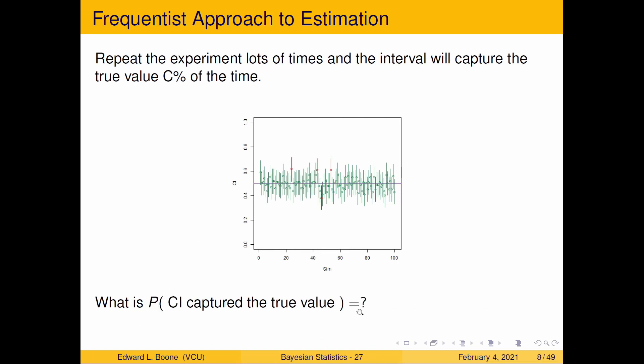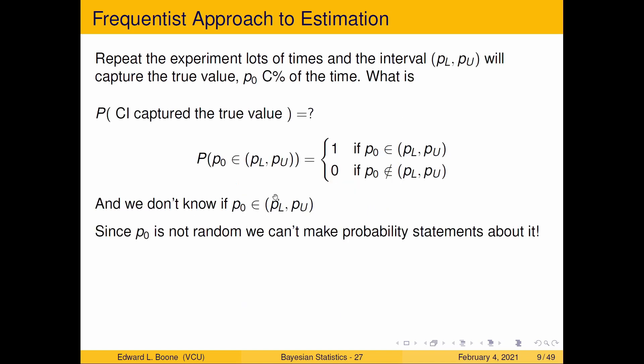What is the probability that our confidence interval captured the true value? So I give you two numbers and I say did this work or not and the answer is it's either one if it did or zero if it didn't. And the problem is is remember we don't know p₀ so we're never going to know whether or not we captured it. And since p₀ is not random we can't make probability statements about it from a frequentist approach.